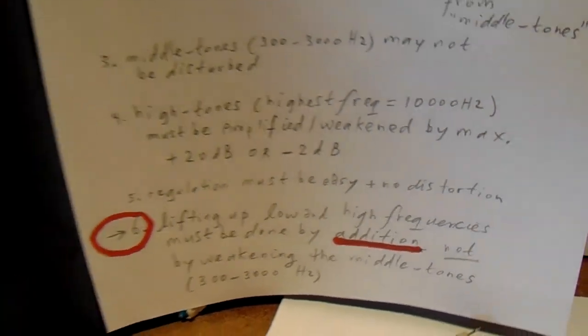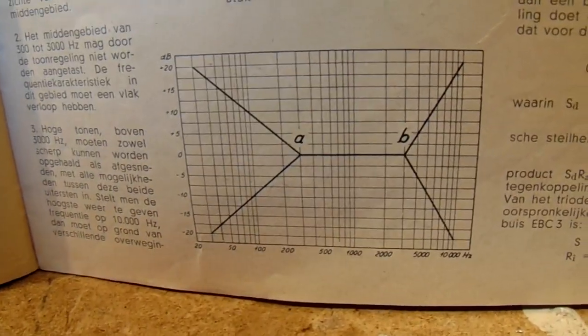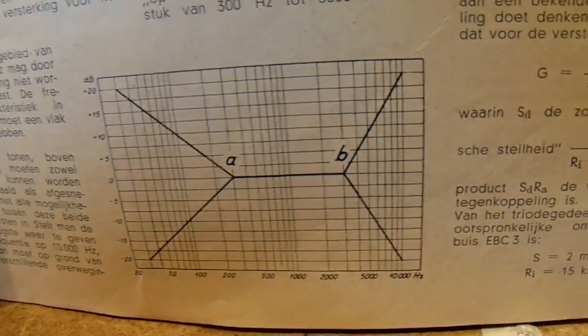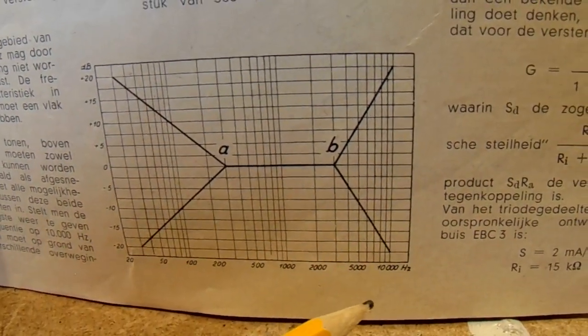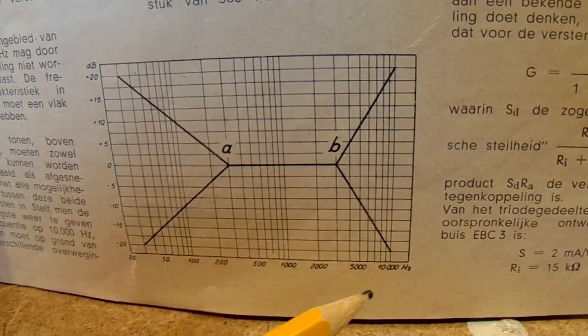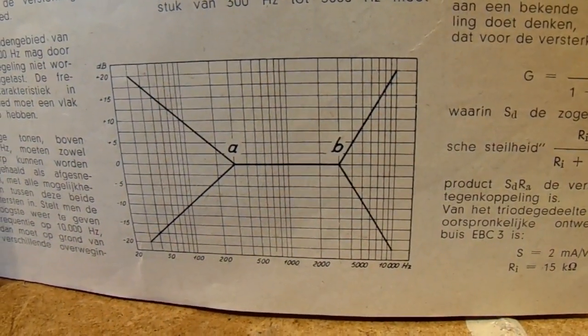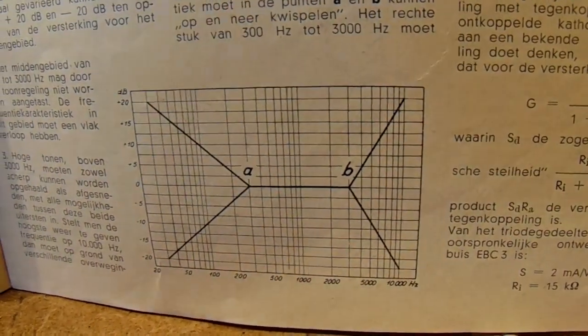And the middle tones were in those days between 300, approximately here, 300 here, and 3000 hertz. Nowadays, of course, that's exactly the same, but we have better amplifiers, better tuners, et cetera.